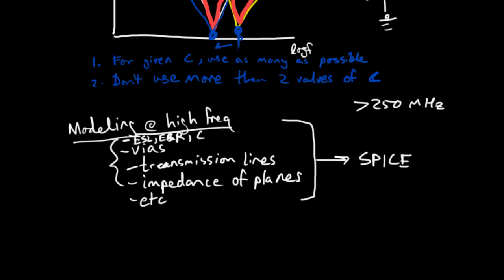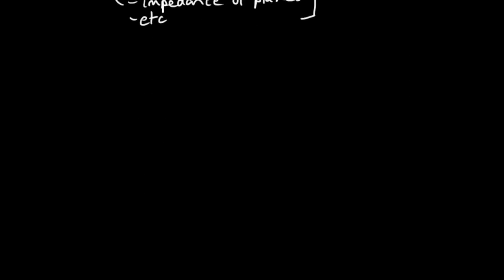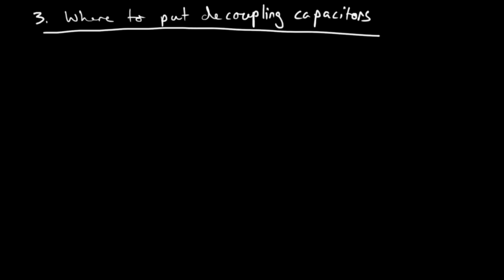Finally, let's answer the question of where to put these decoupling capacitors. Where should we put these decoupling capacitors relative to the power supply in our ICs? Well, the short answer is that you want to put them within an electrically short distance of the component that they're supposed to help.